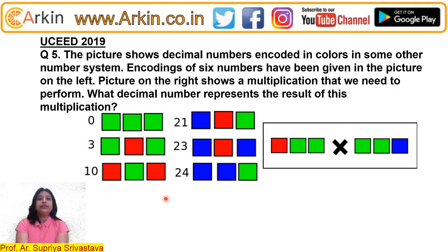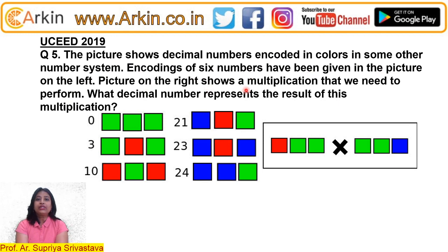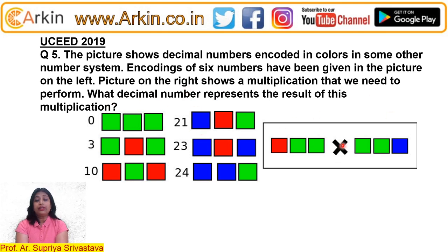Hello everyone, this is Supriya here. I'll be explaining question number 5 of this year's paper. The question is: the picture shows a decimal number encoded in colors in some other number system. Encoding of six numbers have been given in the picture on the left. The picture on the right shows a multiplication that we need to perform — what decimal number represents the result of this multiplication?